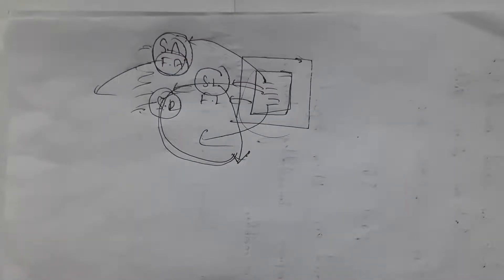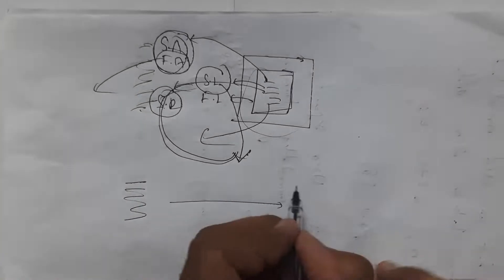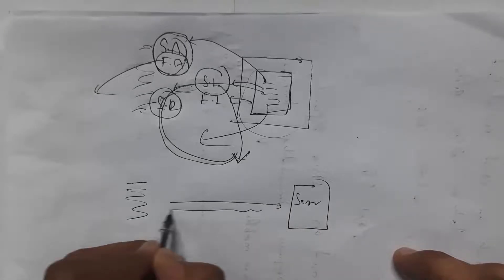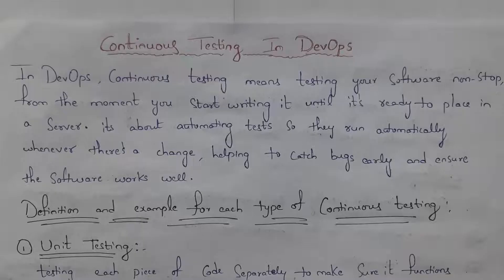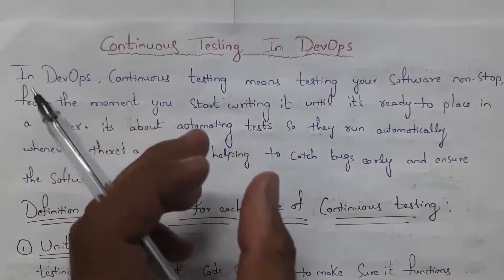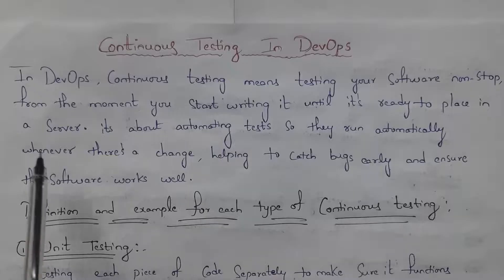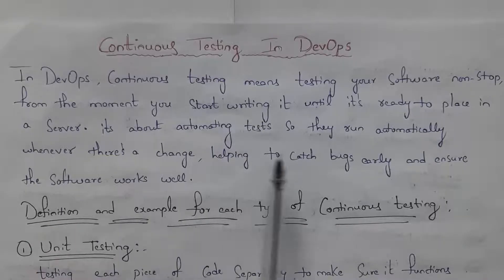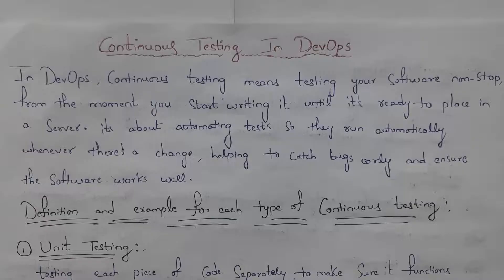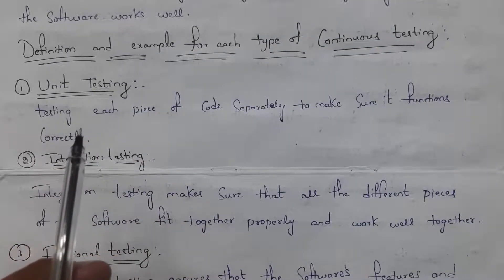In the software development life cycle, we need to perform various kinds of testings starting when a developer writes code until before placing that code in the server. Continuous testing means testing your code non-stop from the moment you start writing it until it is ready for deployment. It's about automating tests so they run automatically whenever there is a change, helping to catch bugs early and ensure software works well.